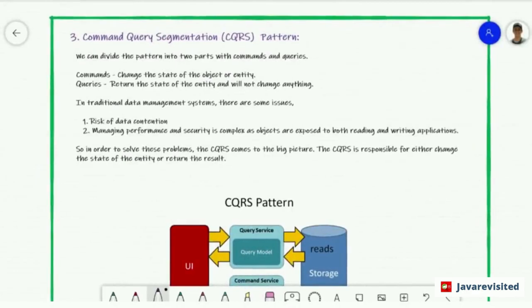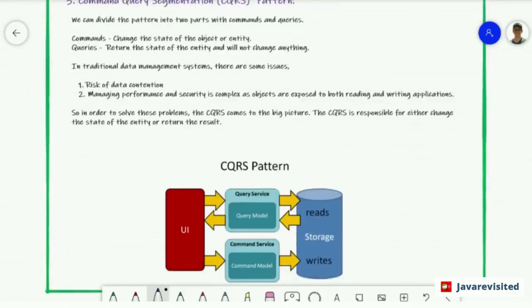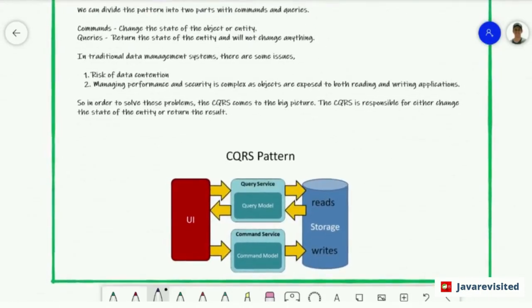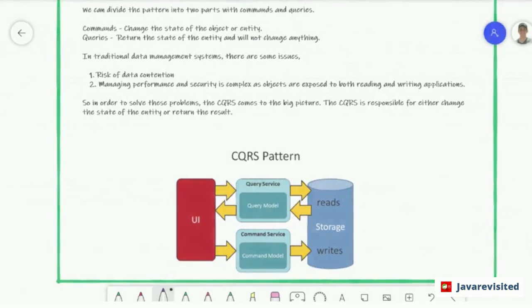Command Query Segmentation. We can divide the pattern into two parts with commands and queries. Commands change the state of the object or entity and queries return the state of the entity and will not change anything. In traditional data management systems, there are some issues. The first issue is risk of data contention. The second one is managing performance and security as objects are exposed to both reading and writing applications.